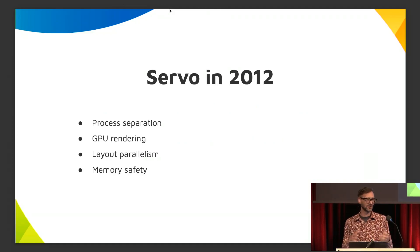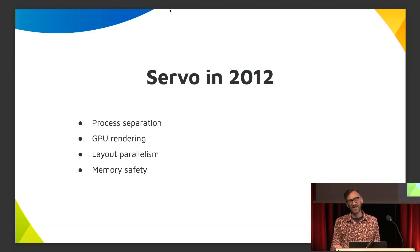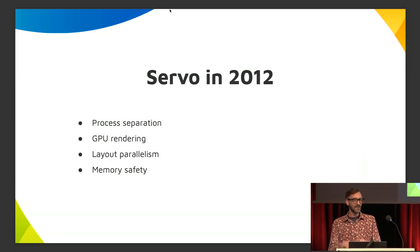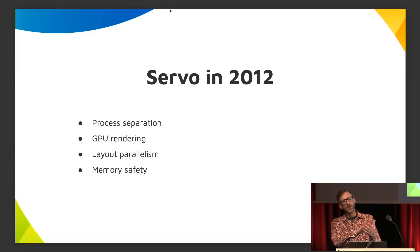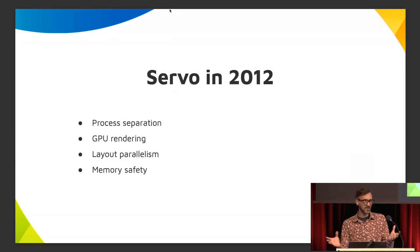When Servo was first created in 2012, it had some really unique aspects. One is that it had process separation — the different tabs you had were separated into different processes, so one tab couldn't mess with another. That really helped with security and parallelism. Servo also relied very heavily on the GPU to render the graphical aspect of the page: compositing different parts of the page on the GPU, and also GPU rasterization, which meant that divs were drawn using GPU hardware rather than the CPU.